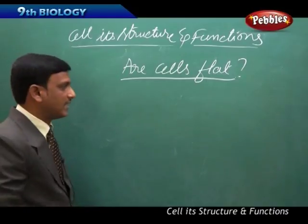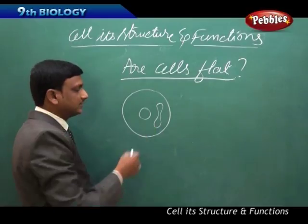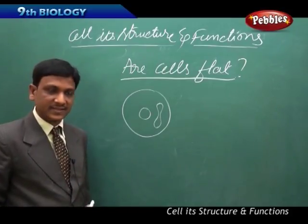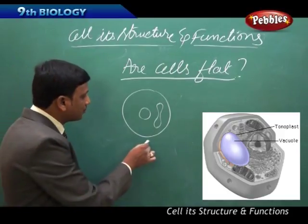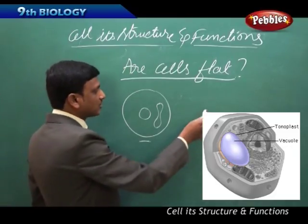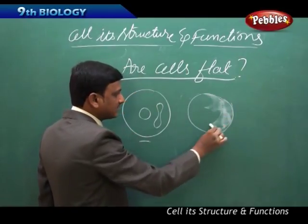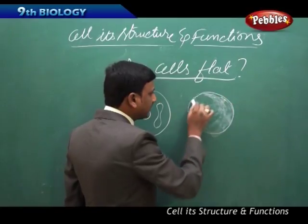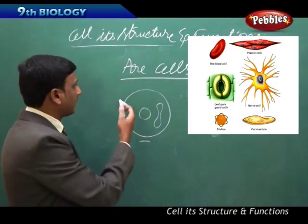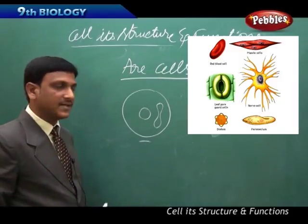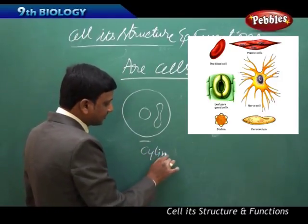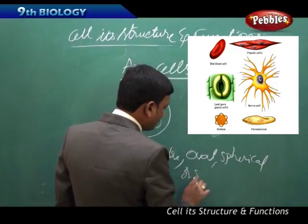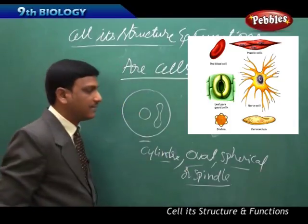When we draw the diagram of a cell, we draw a two-dimensional diagram, so it appears like cells are flat. But in fact, cells are not flat — they have a three-dimensional shape. For example, cells can be spherical, just as the earth is not flat but spherical. Using a powerful microscope, we can observe the three-dimensional shape of a cell. Plant or animal cells may exist as cylinder, oval, spherical, or spindle shapes — whatever the shape, it is a three-dimensional shape.